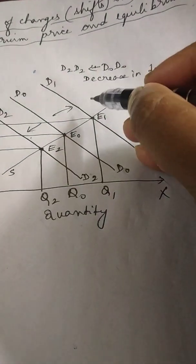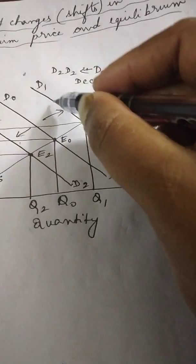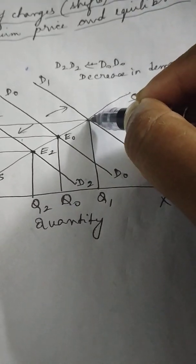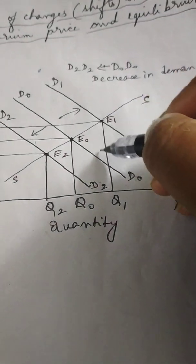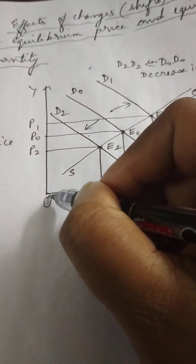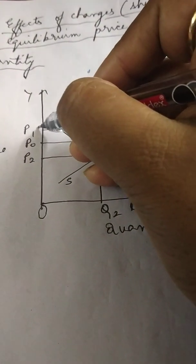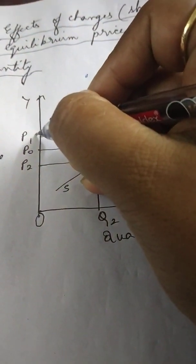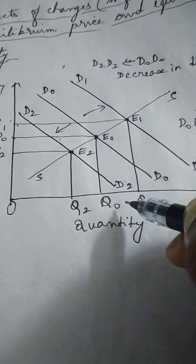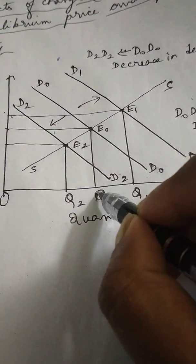The new equilibrium — be careful — the new equilibrium will be the point of intersection of the new demand curve and the initial supply curve. The new equilibrium is E1, equilibrium quantity is OQ1, and the new equilibrium price is OP1.